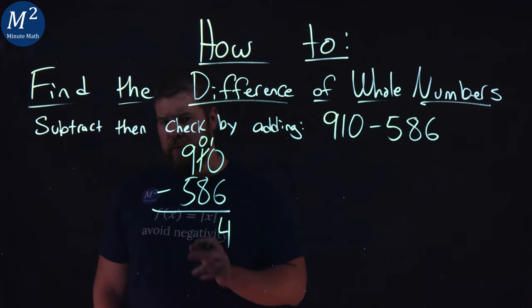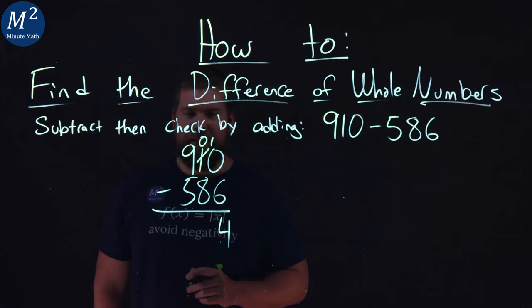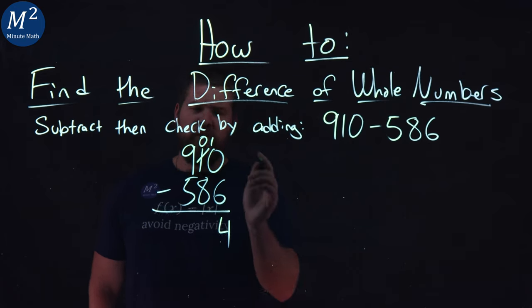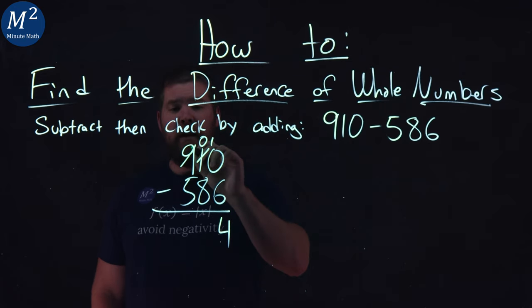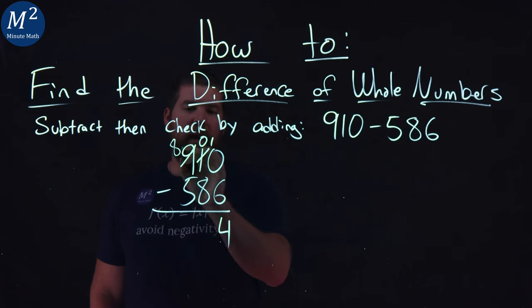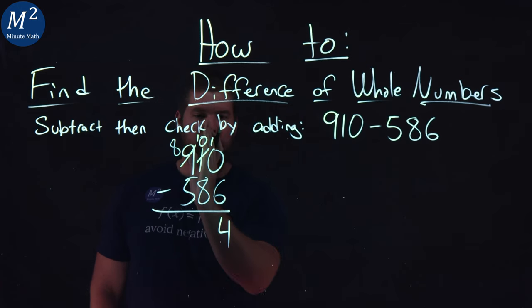Now let's move on over. 0 minus 8. Well, can't do that either. So I draw again from the 9. 9 turns into an 8, and I put a 1 over here to the middle column here, where the tens place is. 10, if you can see it, minus 8 gives me a 2.